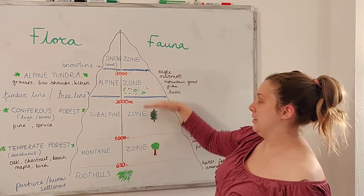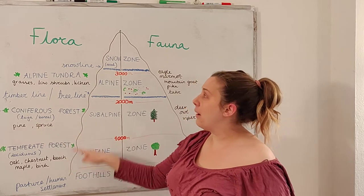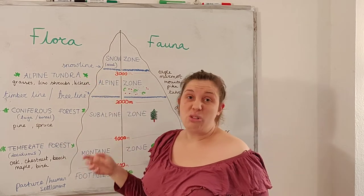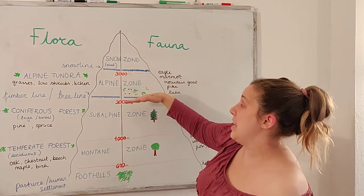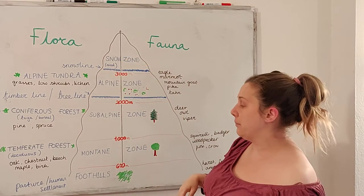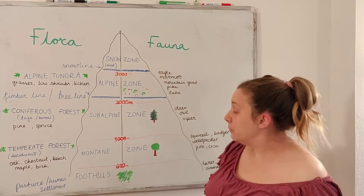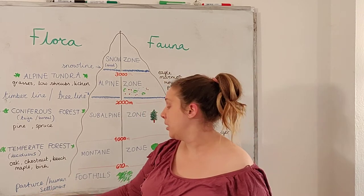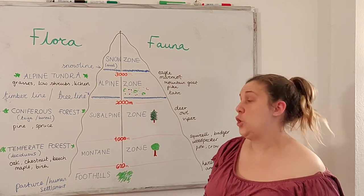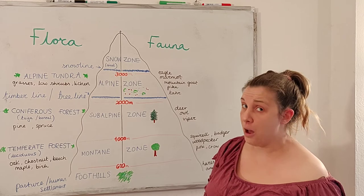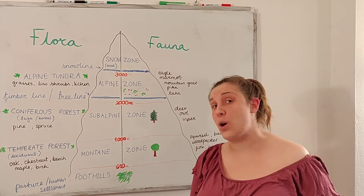Nicely divided into five sections. If we then think about the flora, the plant life of the mountain environment is different depending on which of these altitudinal zones we're in. In the bottom, in the foothills, there would be pasture and human settlement. It depends on the country — in Europe, for example, there might be farms, apple trees growing, or some towns.